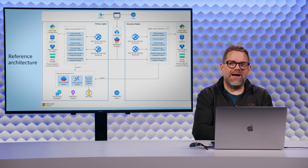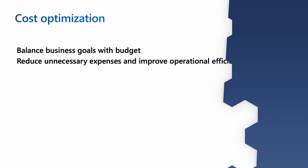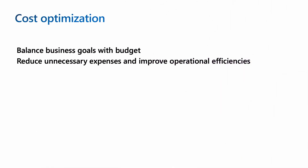Let's go back in time just a little bit. This is the reference architecture that we deployed, and there is a lot there — Azure Front Door, two app services, Azure Cache for Redis, Azure Storage, App Configuration, App Insights, a Key Vault, and multiple regions. When we're deploying and developing this, we want to be cost optimized, balancing our business goals with the overall budget, and reducing unnecessary expenses while improving operational efficiencies — in other words, doing more with less.